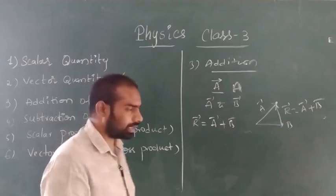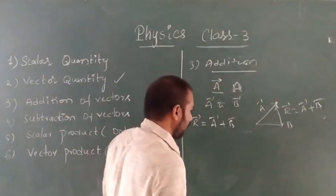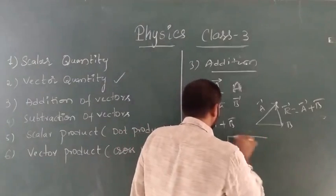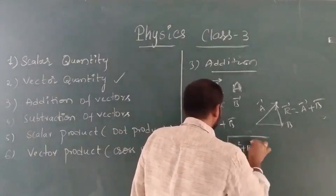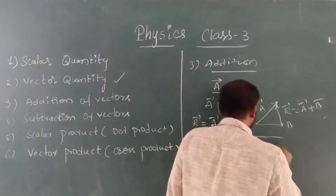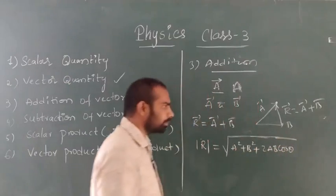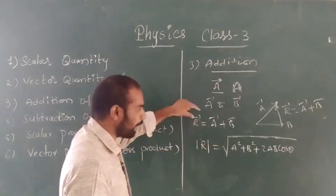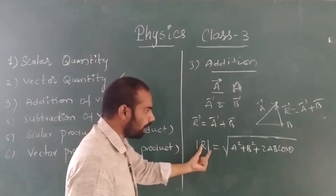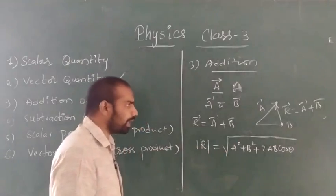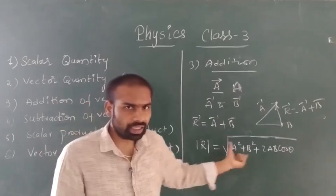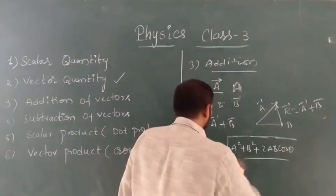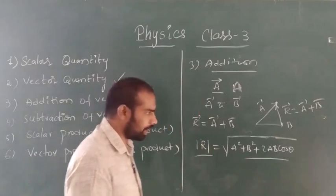The magnitude of the resultant vector can be given by the modulus of R-bar, which is the square root of A² plus B² plus 2AB cos θ. This is the general formula for the magnitude of the resultant vector when adding two vectors A-bar and B-bar. This formula was already covered in intermediate.